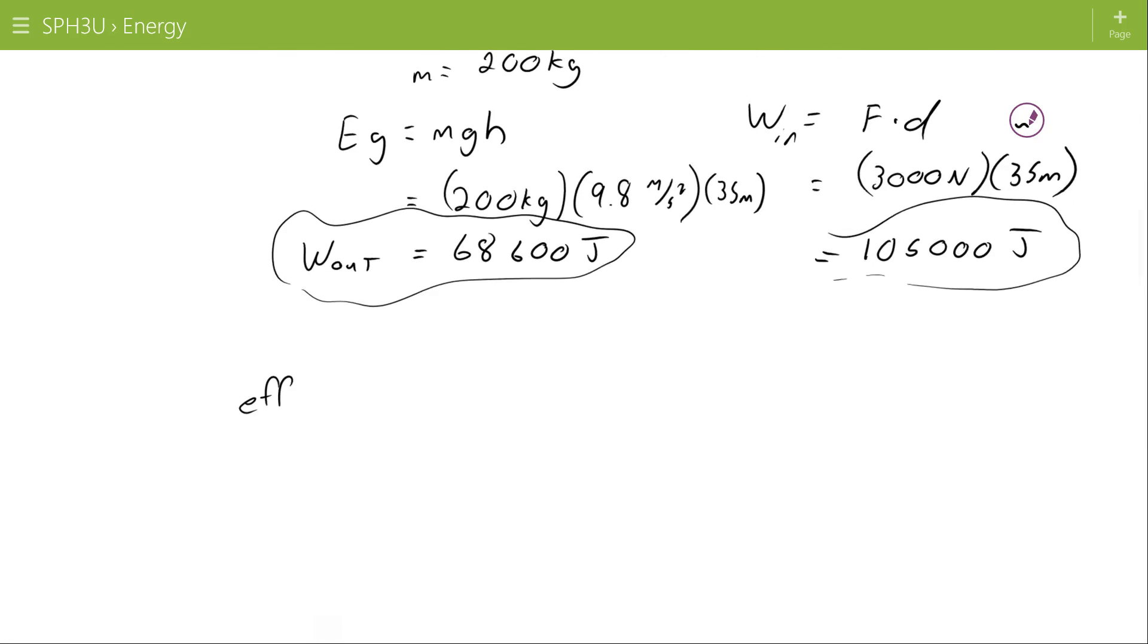Regardless, the efficiency is the ratio of the work that you achieved divided by the work that you had to input to make that happen. So 68,600 joules was what we got out of putting in 105,000 joules. So that leads to an efficiency of 65.3%. So 65% of the input work went into the form that we wanted.